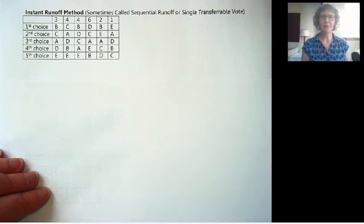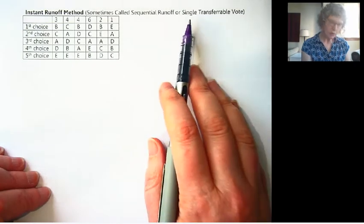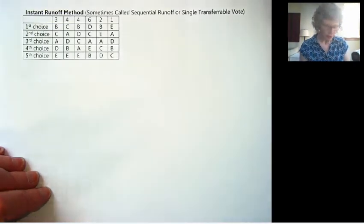Hi, so we're continuing on with our voting methods videos and this one is about the instant runoff method. I'm really excited about this method because it's starting to be used around the US in some cities and counties. There are some videos in the playlist about this and sometimes it's called sequential runoff or single transferable vote. There's all kinds of names for it.